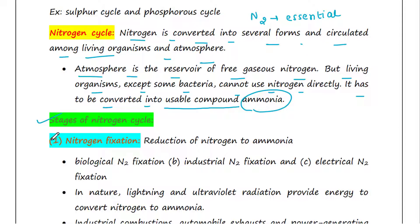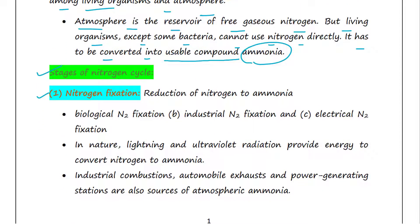It has to be converted into a usable compound, that is ammonia. Let's see the stages of nitrogen cycle. The first stage is nitrogen fixation. Reduction of nitrogen to ammonia is called nitrogen fixation. This reduction is done by three methods: biological nitrogen fixation, industrial nitrogen fixation, and electrical nitrogen fixation.